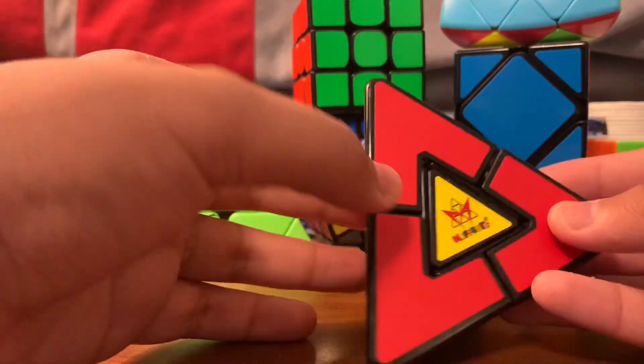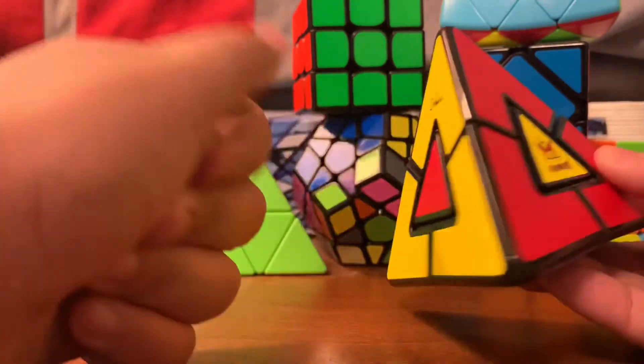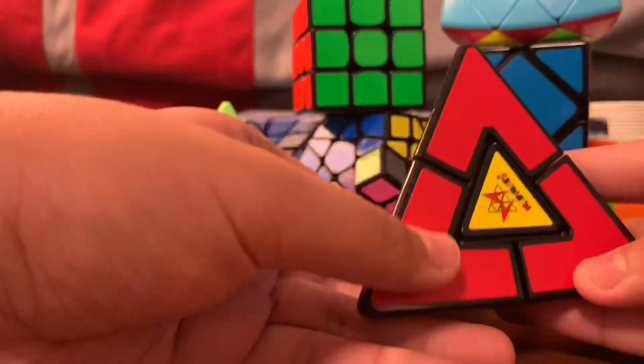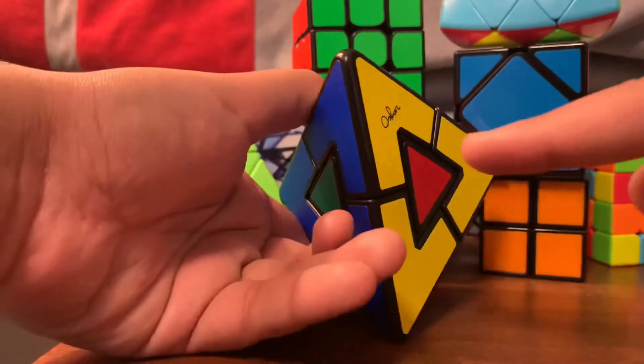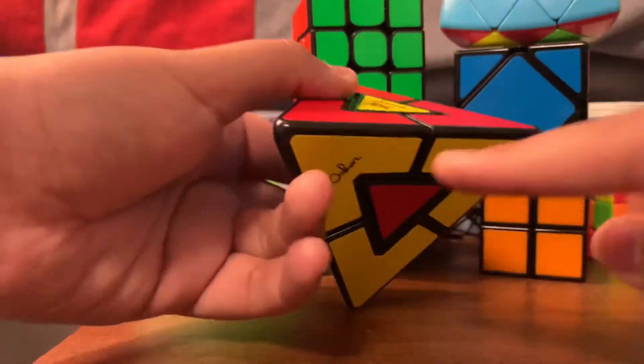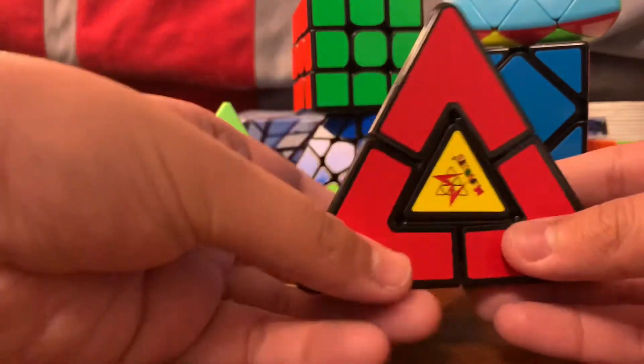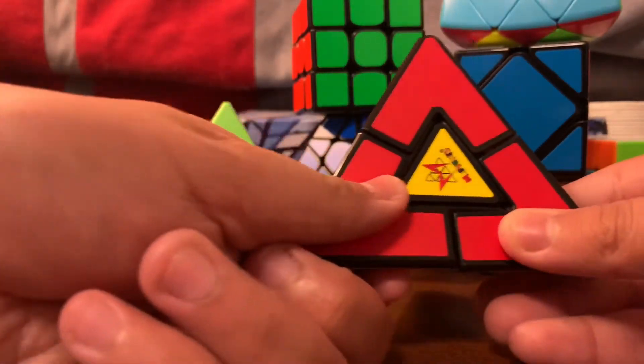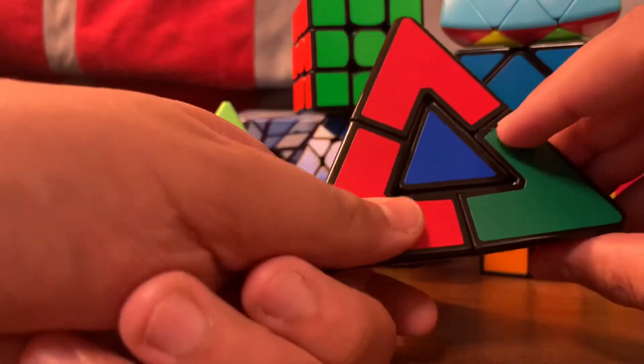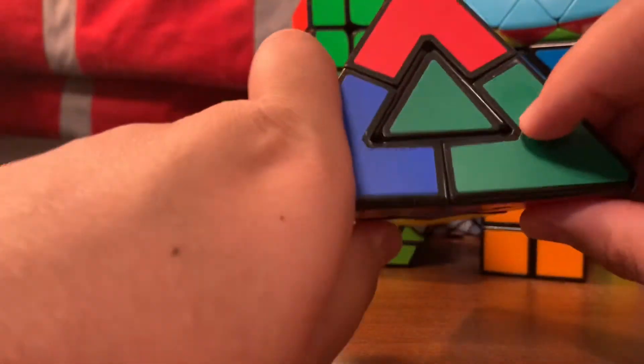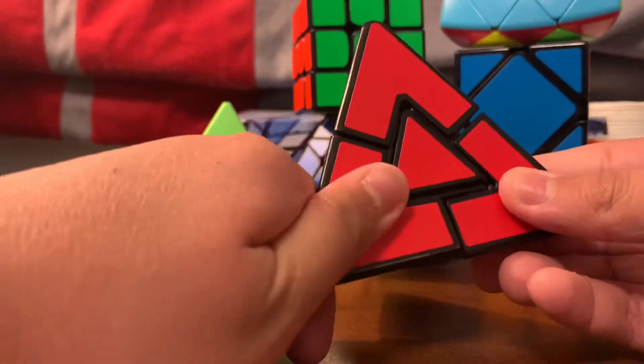So all we have to do is perform this algorithm, the only four-move algorithm, by keeping the piece which has to be fit over here downwards. So we have to fit the red piece here, so we keep it downwards and perform these four moves: this piece down and this one down, this one up and this one up.